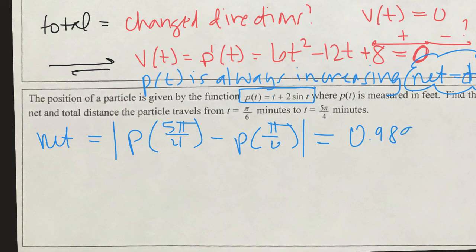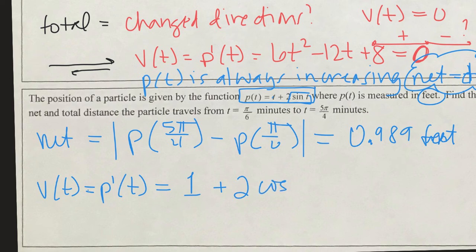Feet are our units. Now the distance, the total distance, is the one we have to check. We're going to take the velocity, which is the derivative of our position function. So the derivative of t is 1 plus 2, the derivative of sine is cosine, cosine t, I guess we should call it t maybe.